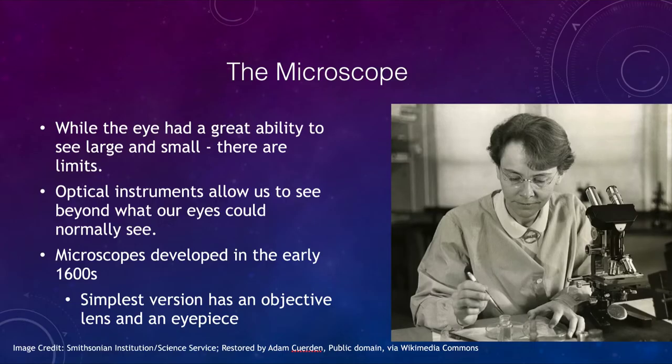Let's start off looking at the microscope. We know that our eye has a great ability to see very large and very small things, but there are limits. Optical instruments allow us to see beyond what our eyes could normally see. Microscopes have been around for hundreds of years, and the simplest ones came in the early 1600s, similar to the development time for the telescope.